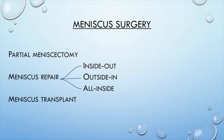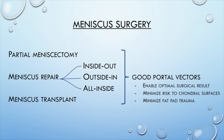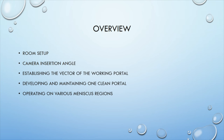Meniscus surgery includes partial meniscectomy, meniscus repair, and meniscus transplant. Repair can be broken down into inside-out, outside-in, or all-inside techniques. With all of these procedures, it's really important to have good portal vectors, because this lets you access compartment regions in a way that enables an optimal surgical result, decreases risk to surrounding chondral surfaces, and decreases the amount of trauma that occurs in the fat pad. The most important things I'll be discussing today are how to establish an optimal vector for the working portal, techniques for developing and maintaining one clean portal, and the various regions of the meniscus and how best to approach them.